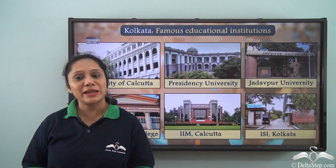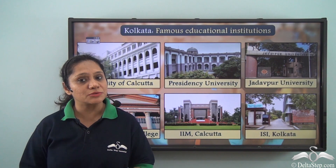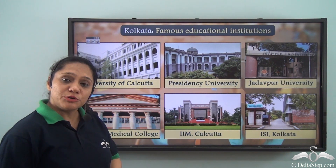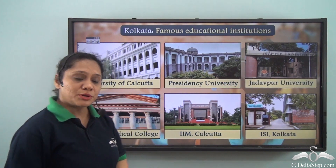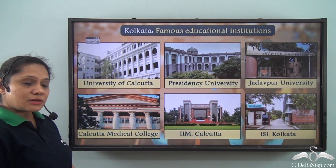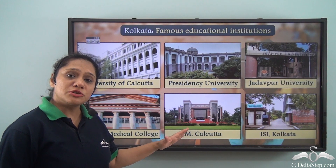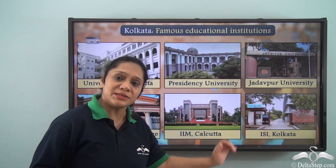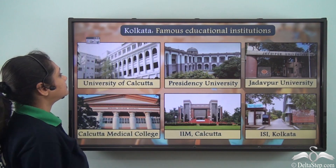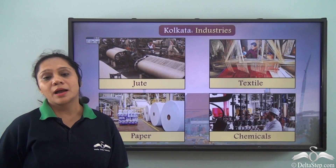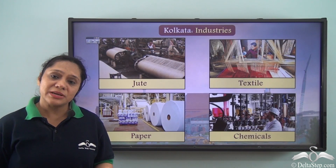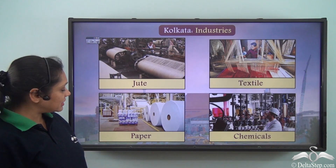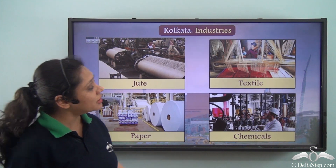Kolkata has many famous educational institutes like the University of Calcutta, Presidency University, Jadavpur University, Calcutta Medical College, Indian Institute of Management, and the Indian Statistical Institute. Many industries also thrive in Kolkata, including the jute industry, paper industry, textile industry, and chemical industry.